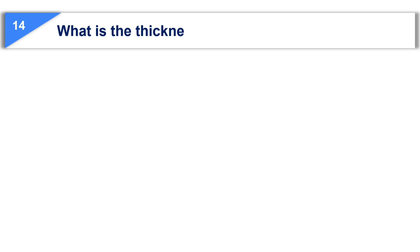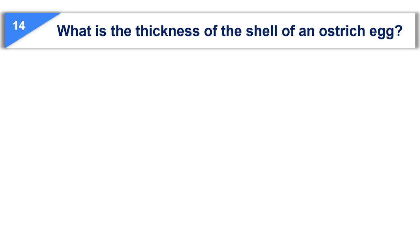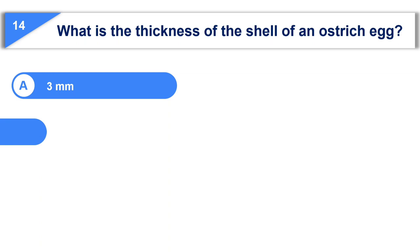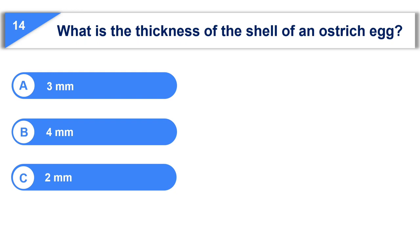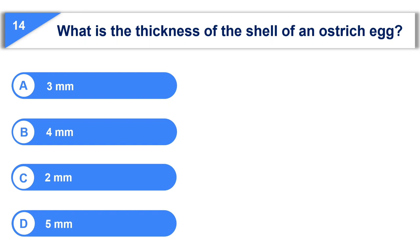The next question is, what is the thickness of the shell of an ostrich egg? Option A, 3 millimetres. Option B, 4 millimetres. Option C, 2 millimetres. Option D, 5 millimetres.